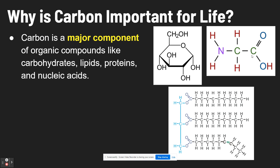This is an amino acid. Amino acids have a carbon in the middle — the central carbon — and also a carbon to the right as well. Amino acids are what make up proteins, so proteins are made out of carbon as well.